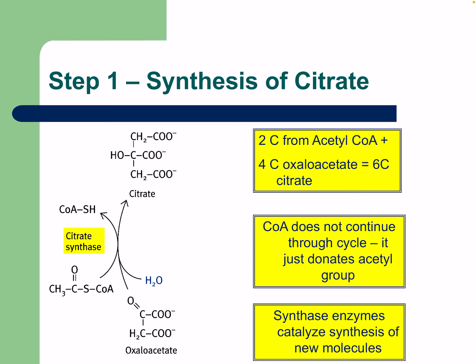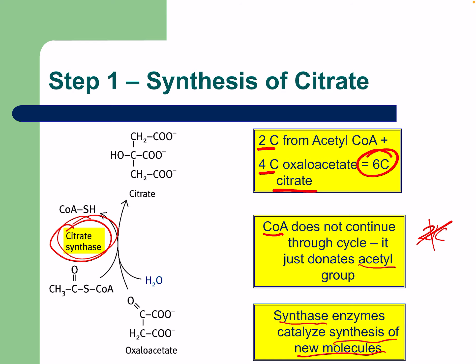The two carbons from acetyl-CoA plus the four carbons of oxaloacetate give six-carbon citrate. Coenzyme A does not continue through the cycle — it simply donates the acetyl group. Recall that CoA has 21 carbons, which is why it is removed from the molecule. The synthase enzyme — citrate synthase — catalyzes the synthesis of the new molecule, essentially a citrate synthesis.